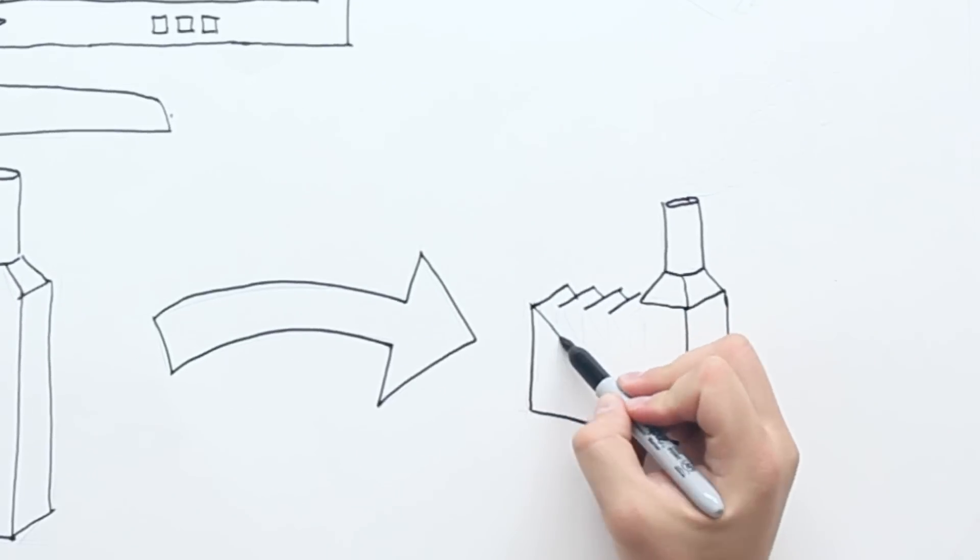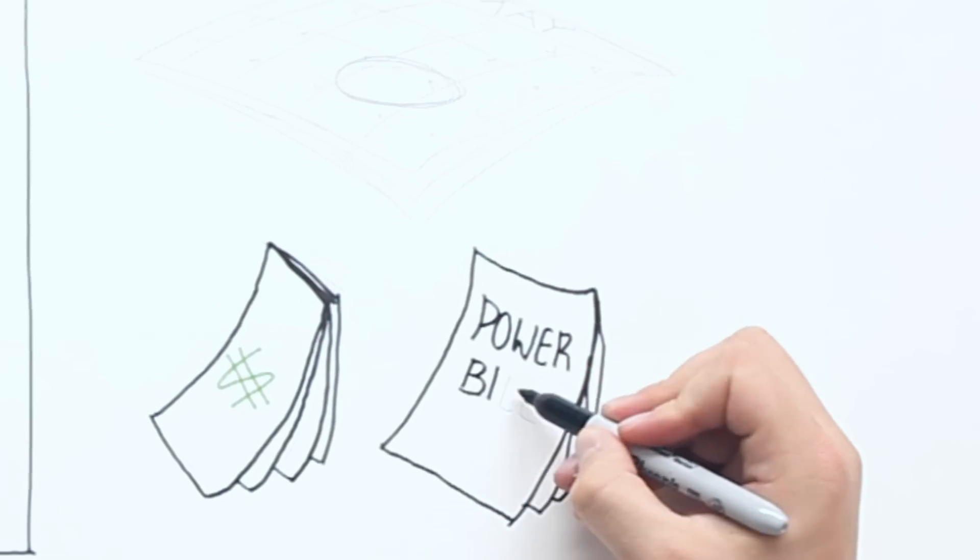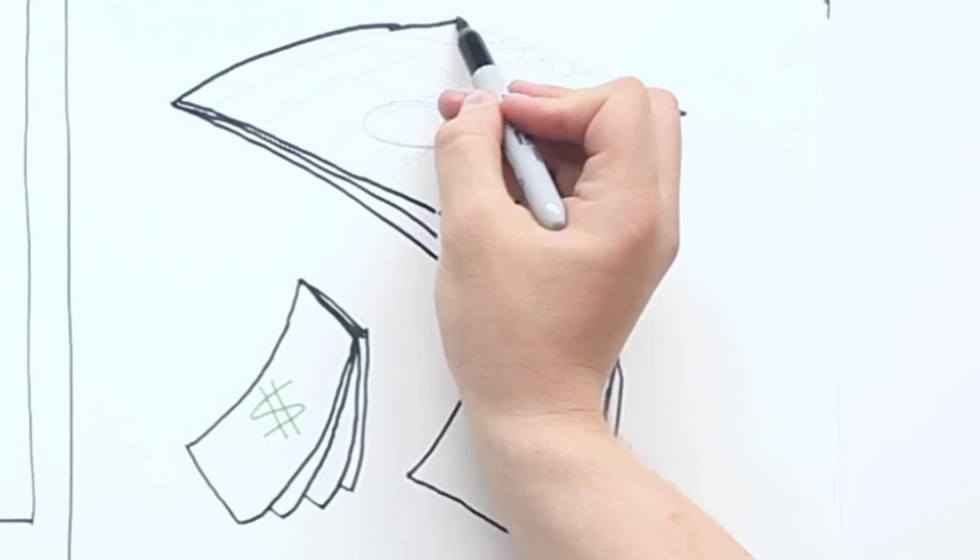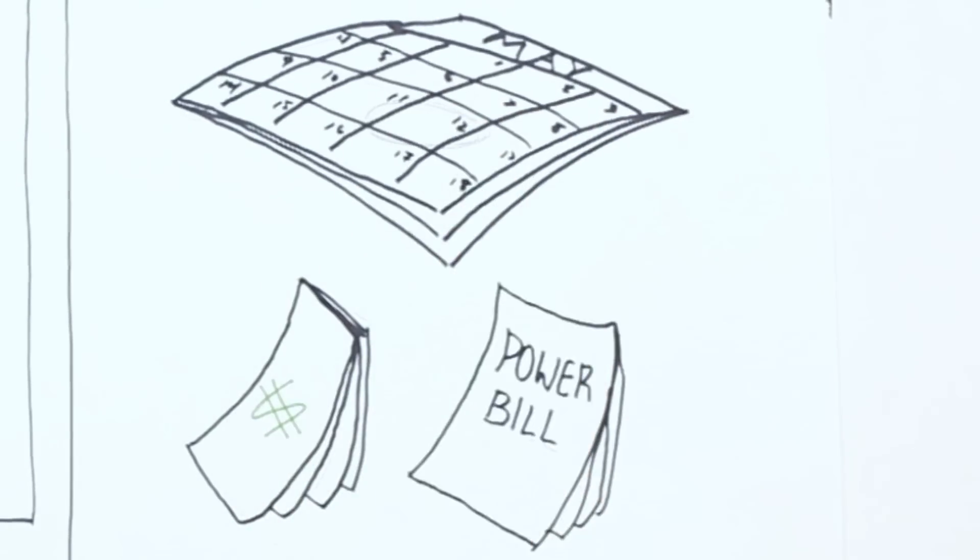To fight and reduce waste, you have to know where all that energy is going. Right now, most manufacturing plants don't have any more information than you might find in your home's power bill. One paper bill at the end of the month.